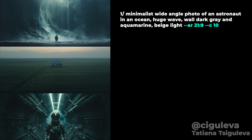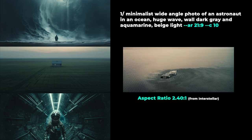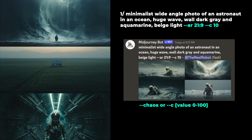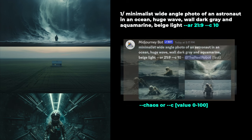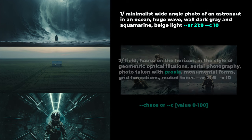AR 21 to 9 is a cinematic aspect ratio — it makes the image wider. Nolan used 2.40 to 1, which is pretty close to this. And the C10 gives a small chaos value, which means MidJourney is going to vary the four images in the grid it gives you, so you have a little more variety and can experiment better when you're not sure how to make the image yet.